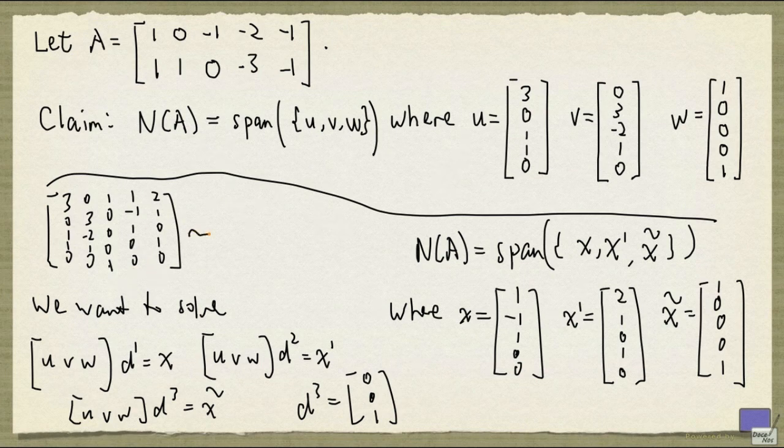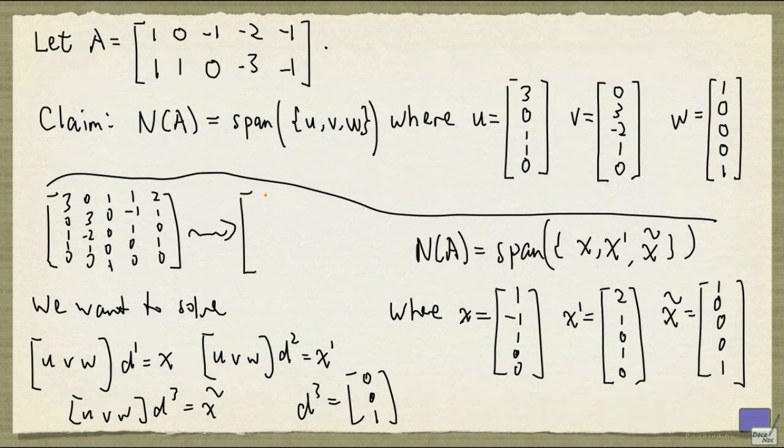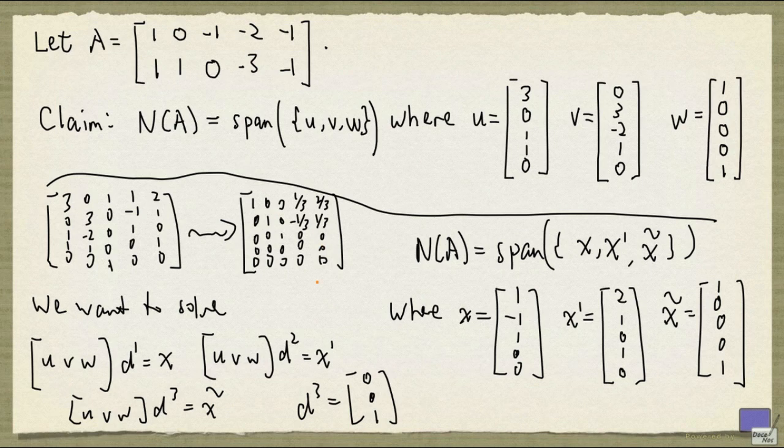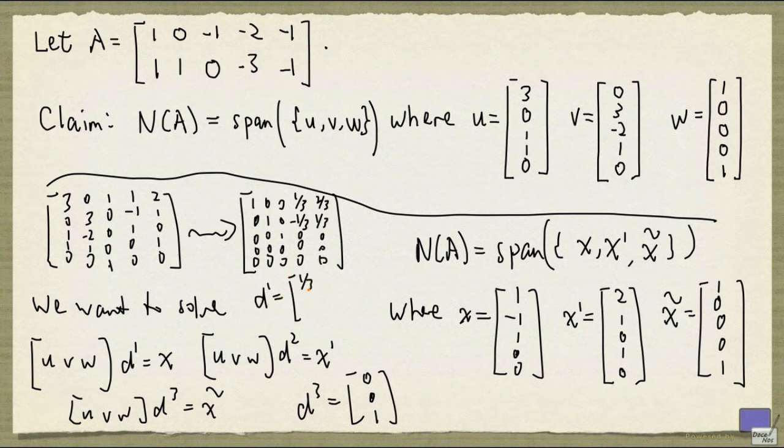And if you row reduce this matrix, you will end up with the following. Okay, so this is what you get after row reduction. So you can set d1 to 1 over 3 and minus 1 over 3, 0.